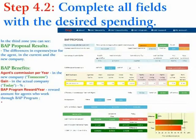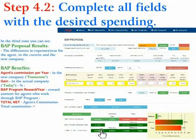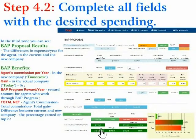In the total zone: agent's commission, total commission, total gain — the difference between the current and new company — and the percentage earned on top of the actual income for an agent working through the B.A.P. Program.